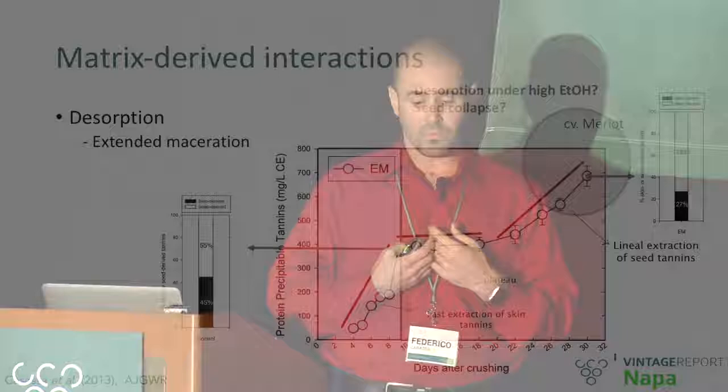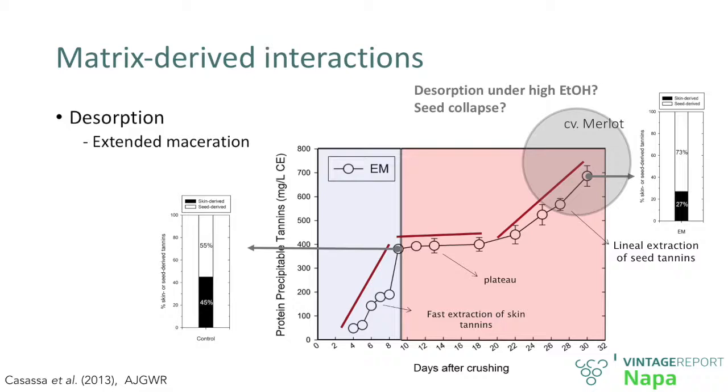After that, we see a plateau. We believe this plateau might be due to — and this is just a possibility — the time in which the seed is essentially absorbing water from the juice. Remember, the seeds are between 37-40% water, so they are very dry and they are in an environment with water activity close to one, so it's very simple for water to flow in. If that model is correct, it essentially explains the subsequent linear extraction from day 20 to day 30. We believe the seeds are taking water, collapsing, and developing micropores that allow us to extract tannins. When we look at the tannin composition here, 70% of those tannins come from the seeds. So we have switched the tannin distribution from 50-50 to 75-25 seed to skins.